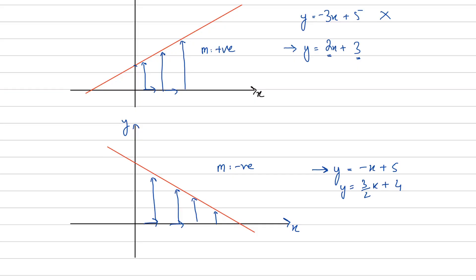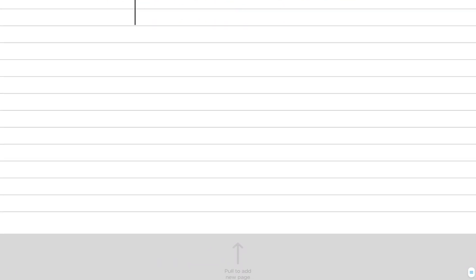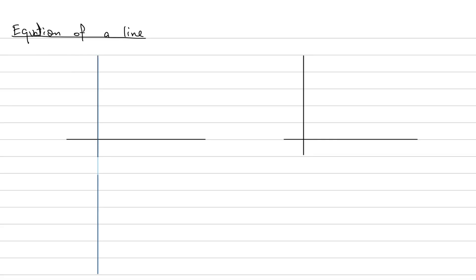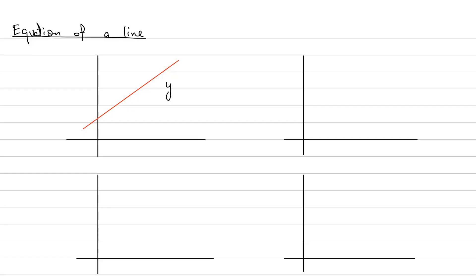These are little things that help you match equations to lines. The next important concept is the equation of a line - specifically what different types of lines look like and what their equations will be. We're going to look at four cases. For a rising line, the equation is going to look like y = mx + c where m is going to be positive. c can vary - it can be positive or negative - but the gradient for sure will be positive.